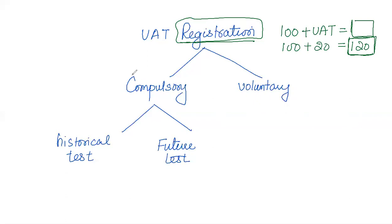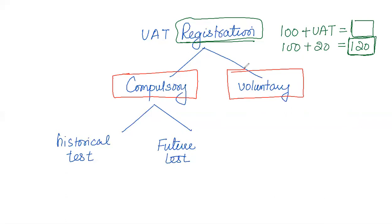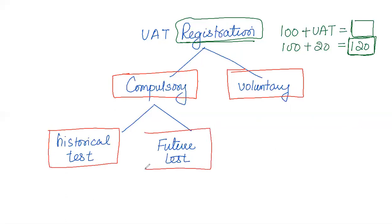There are two types of VAT registration: voluntary registration, where a business can register itself without any condition, and compulsory registration. For compulsory VAT registration, there are two types of tests: the historical test and the future prospect test. If either test is passed, the business must be registered compulsorily and will start charging VAT from customers on goods and services.